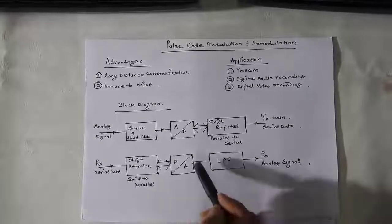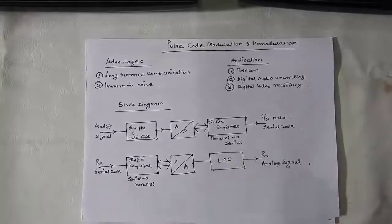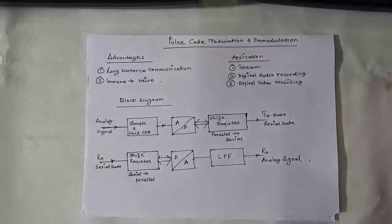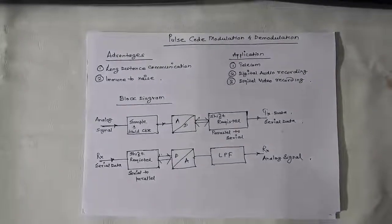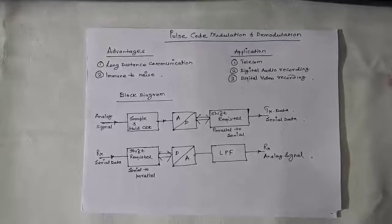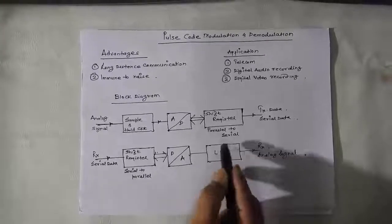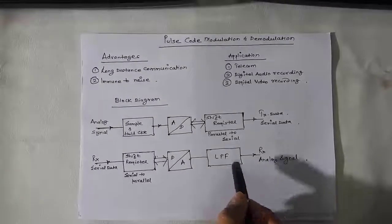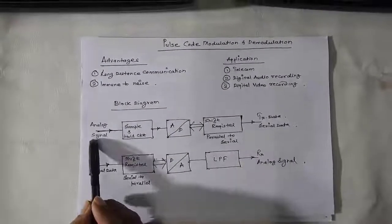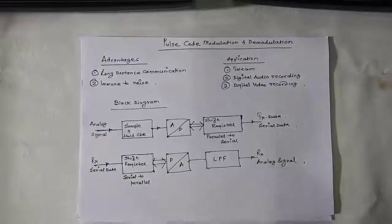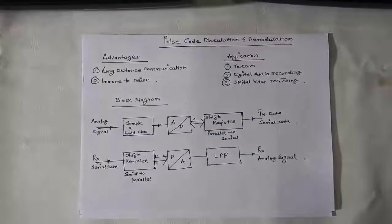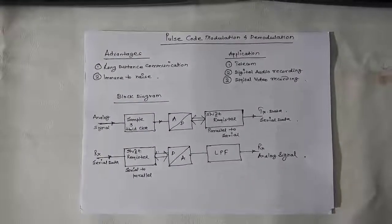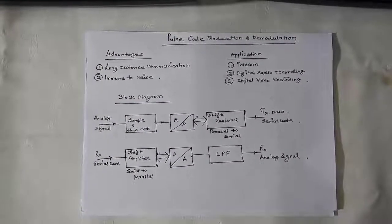Now we are getting the sampled output. We know how to derive the analog signal from the high frequency sampled output. We use a low pass filter to remove the high frequency samples and get the baseband signal, which is the analog signal. Now let's do the experiment practically on pulse code modulation and demodulation.